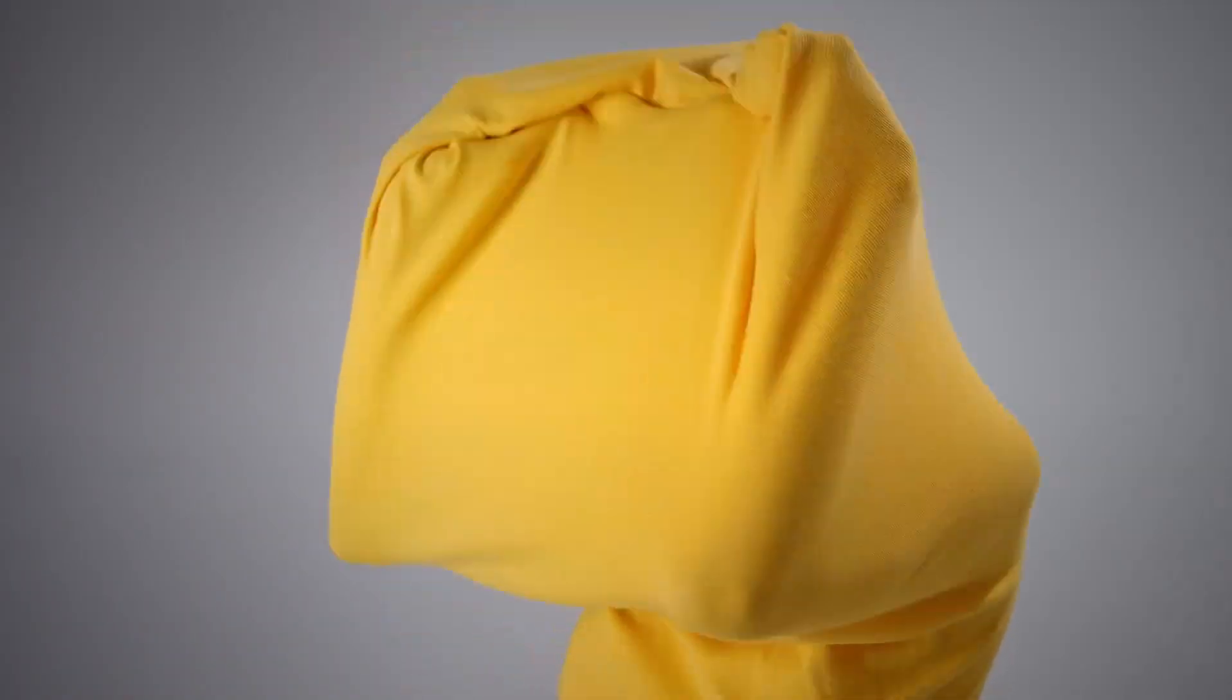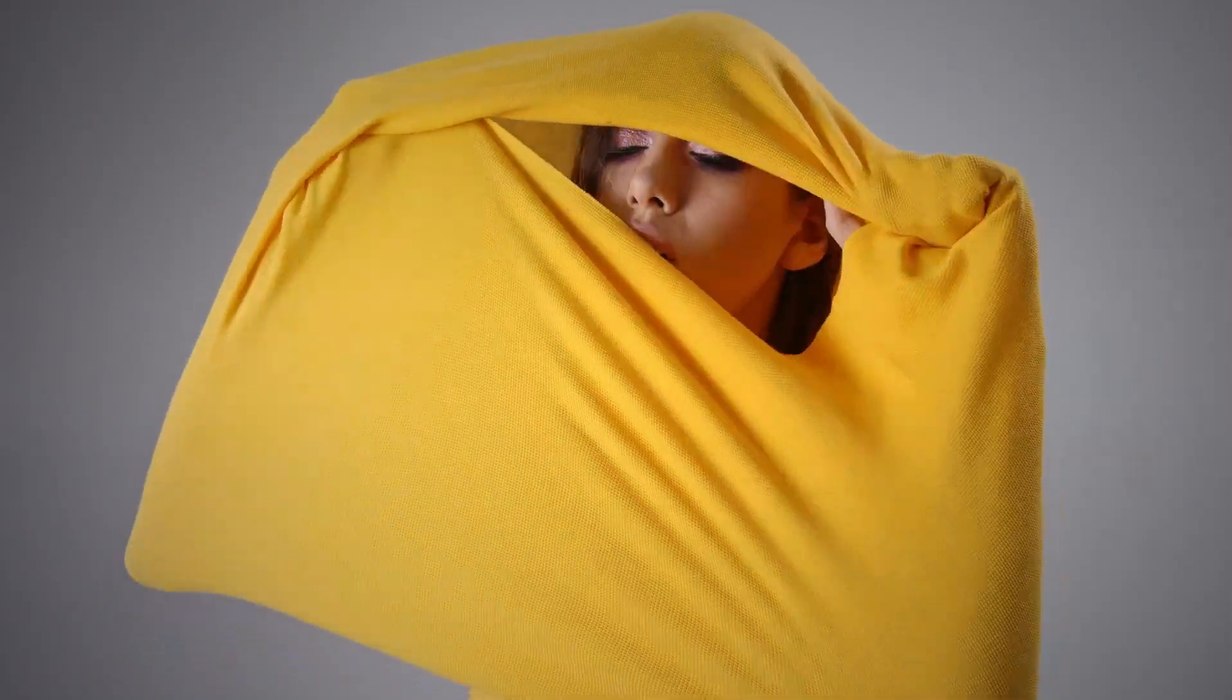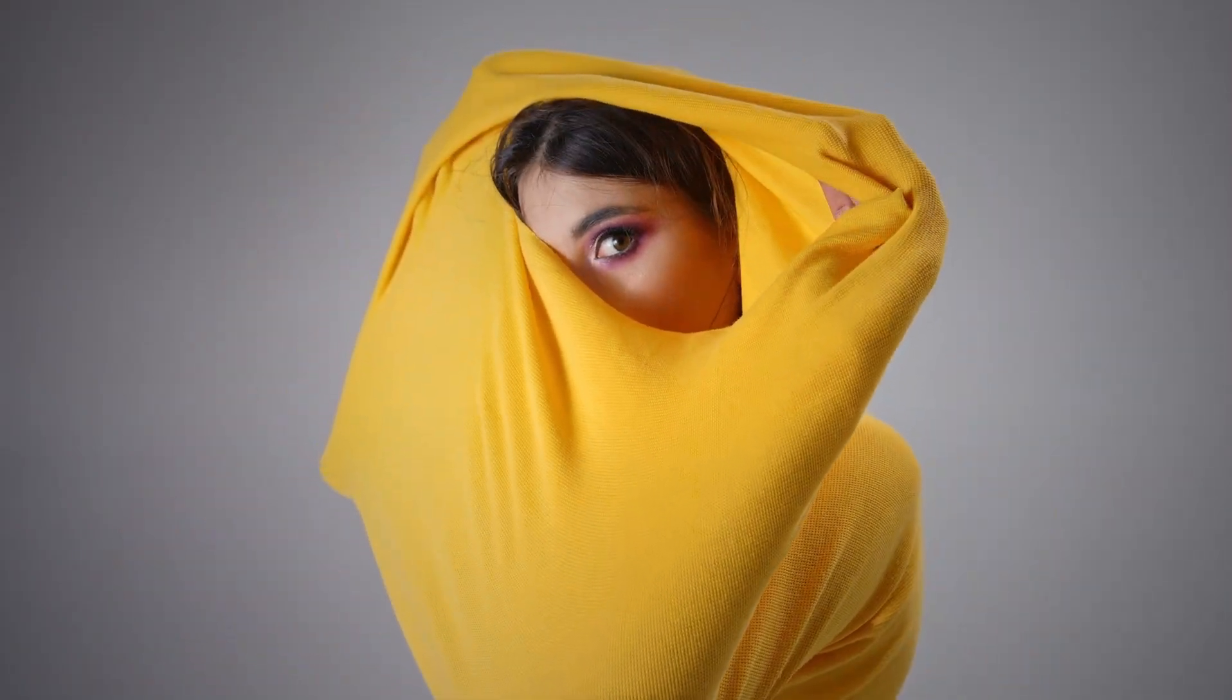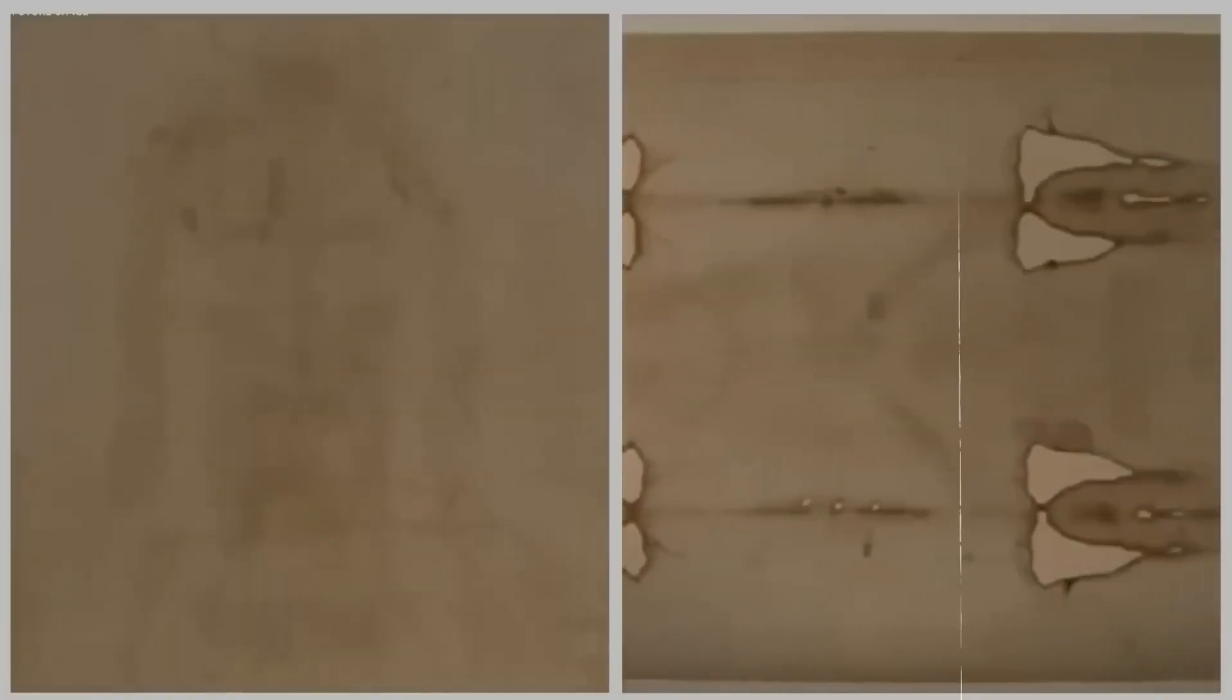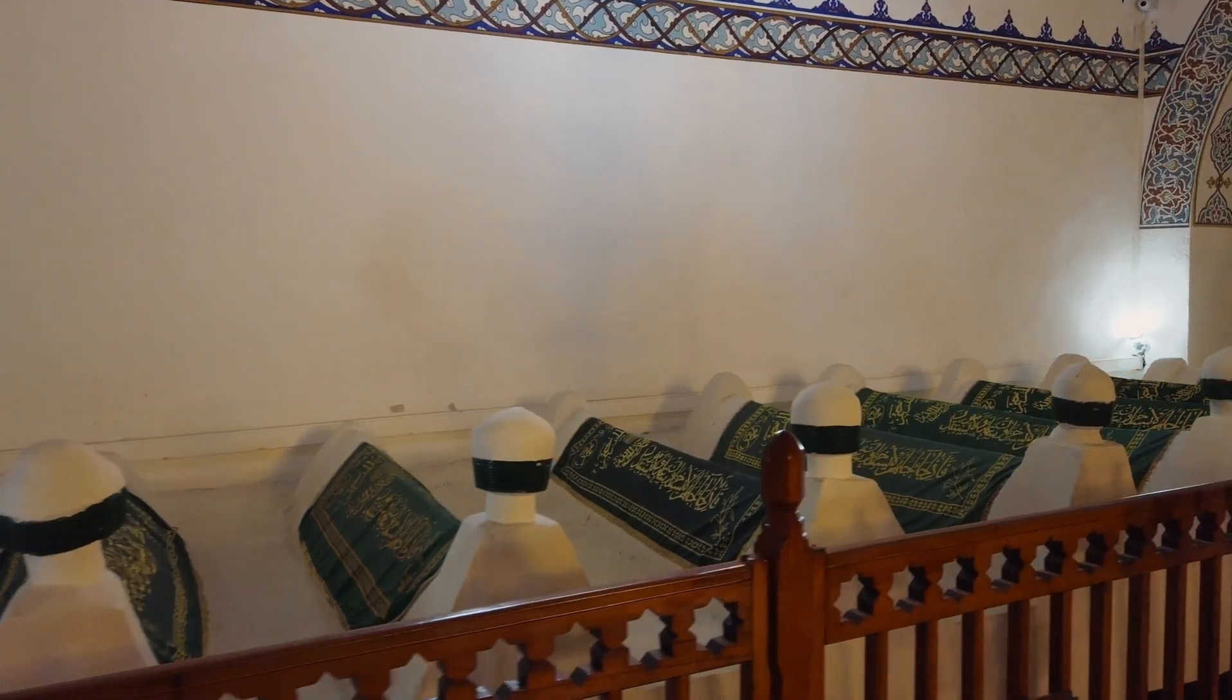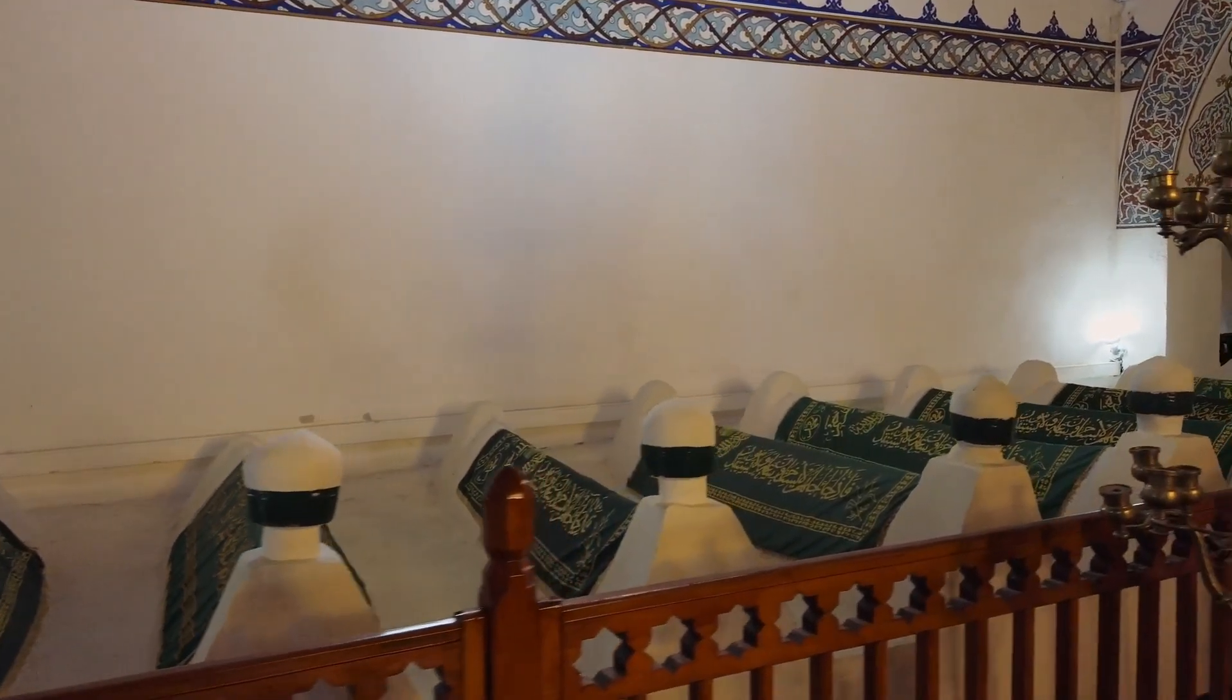The headcloth, known as the Sudarium of Oviedo, contains 124 distinct bloodstains. Blood spatter analysis proves a 100% match between the stains on the Sudarium and the Shroud of Turin. Both cloths contain the same rare blood type, AB positive.